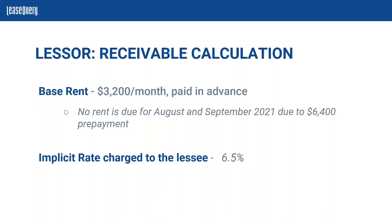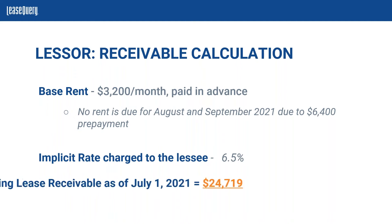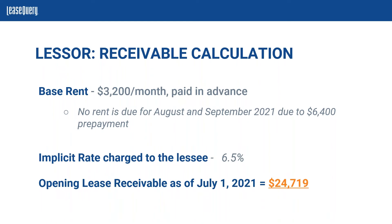We actually have a free tool on our website to determine the present value of the payment, which will work for both the lessee and lessor side. The opening lease receivable as of July 1st for the city is going to be $24,719. This is what we're starting out with for the receivable balance.